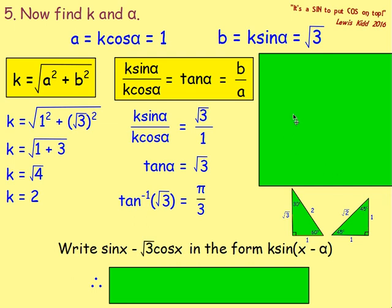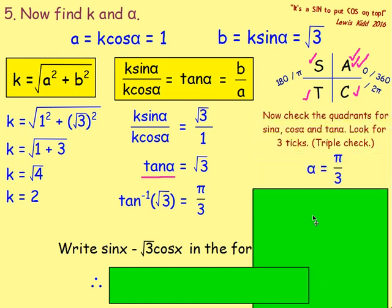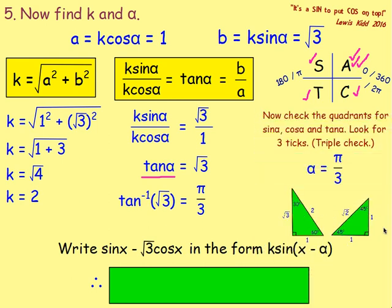From there, think about the quadrants. Cos is a positive — cos is positive in A and C. Sin is also positive — sin is positive in S and A. Tan α is also positive — tan is positive in T and A. All three give ticks for A, so we use A, which is the calculator answer. So α equals pi over 3.